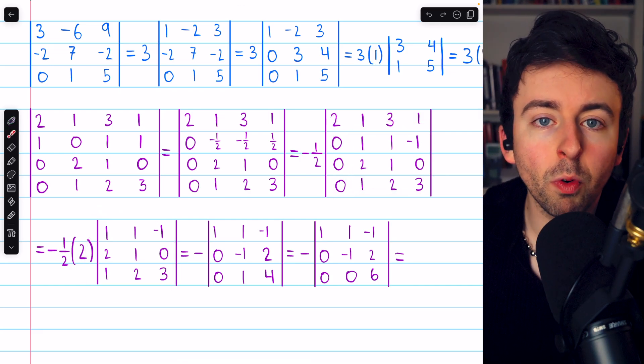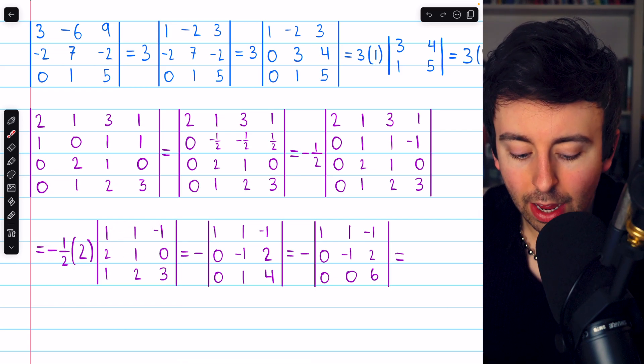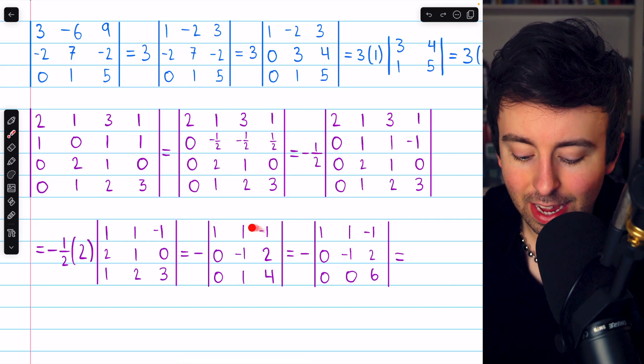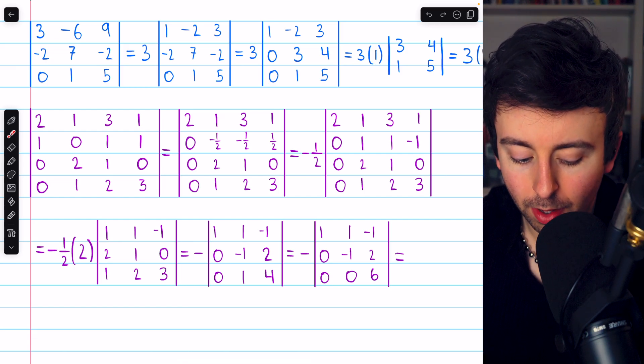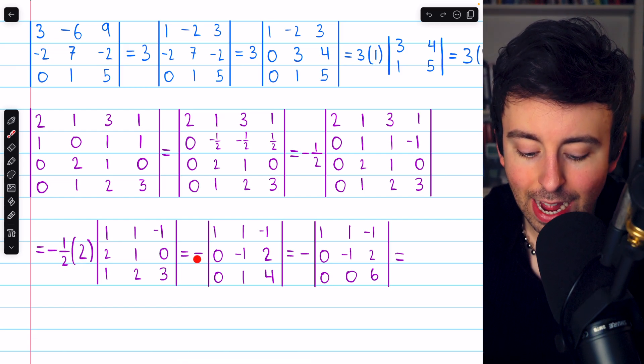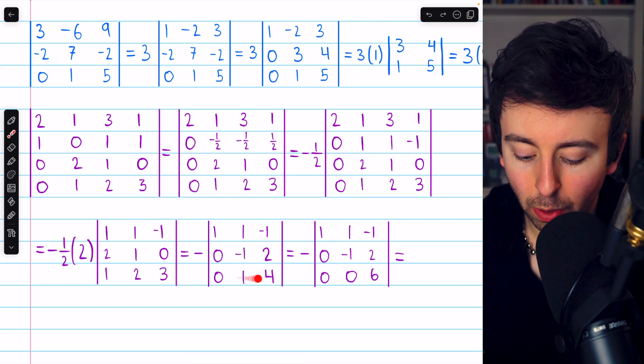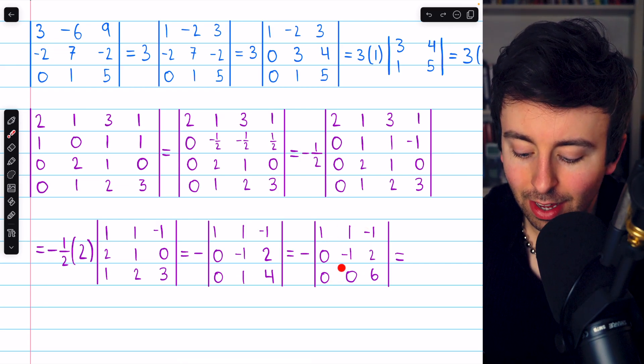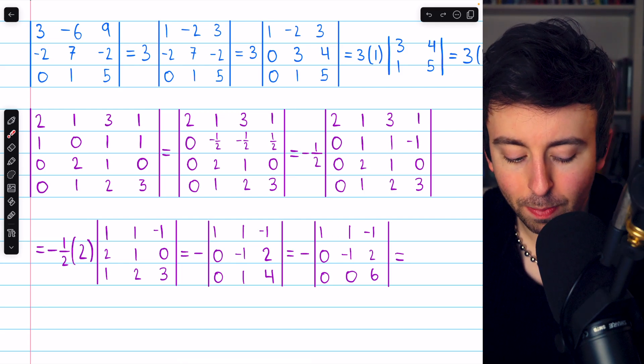Then continuing to perform row operations, we can subtract two copies of row one from row two, and one copy of row one from row three. That gets us here, and that of course does not change the determinant at all. Well, the one half times two is just one, so we have negative one out front, and then we can add row two to row three to get this into triangular form. So once we get a zero there, the matrix looks like this, and the determinant can now be calculated by just multiplying along the pivots.